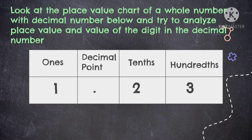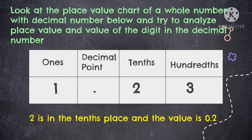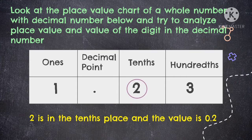Let's proceed to the value and place value of the digit 2. As you can see, 2 is in the tenths place and the value of the digit 2 is 2 tenths. When we write the value of a decimal number, the ones place becomes 0, then copy the decimal point, then copy the digit 2.